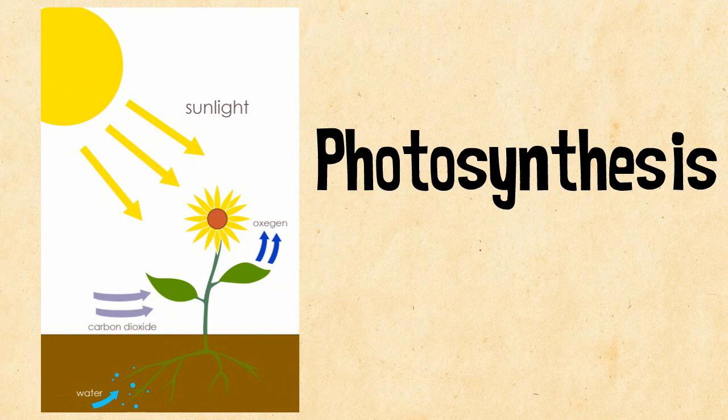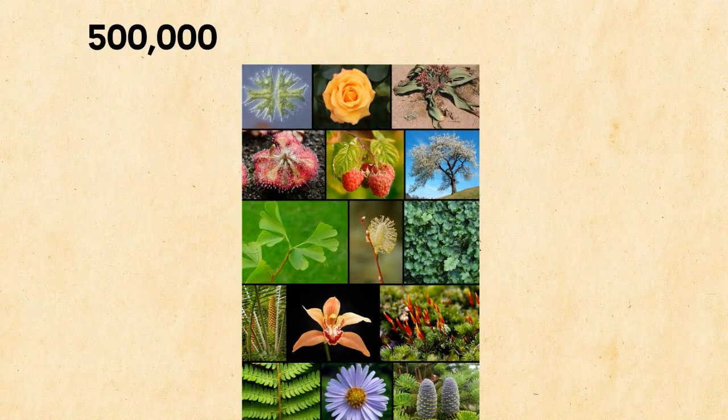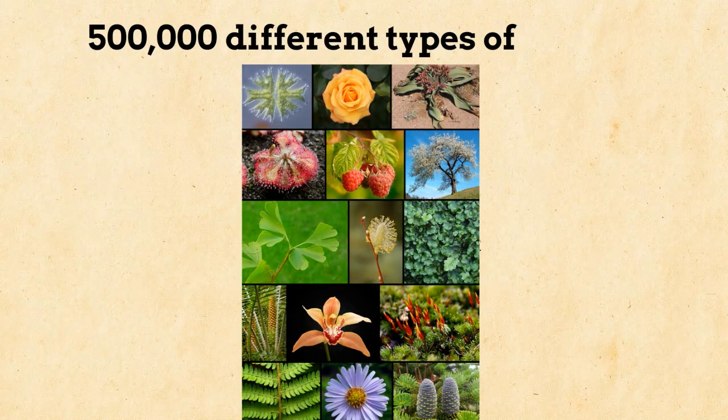There is a very wide range of plants. There are roughly 500,000 species of plants on earth.